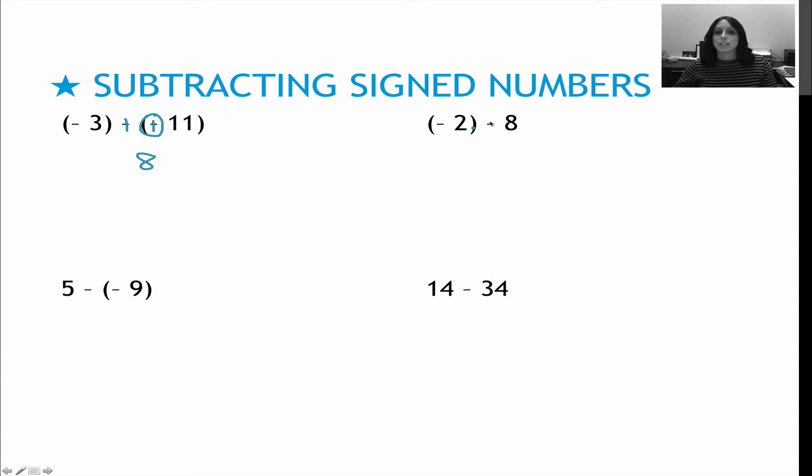For my second one, keep flip change, negative 2 plus negative 8. These are now the same sign, so same sign means find the sum and give it the common sign of negative, so negative 10.